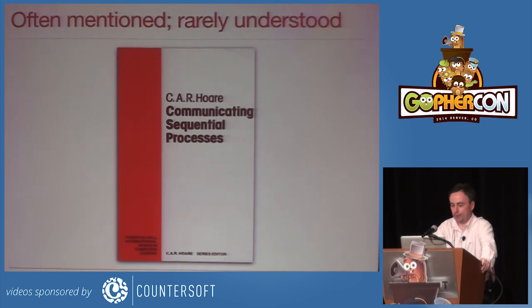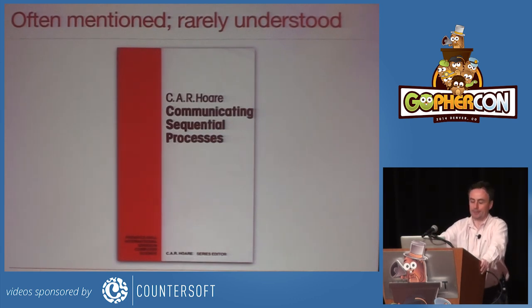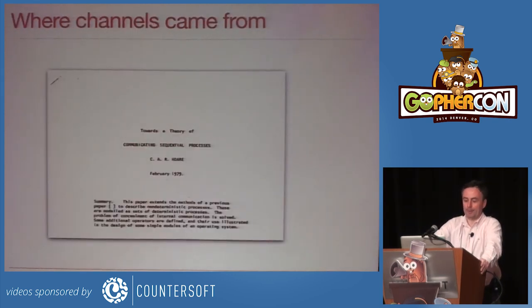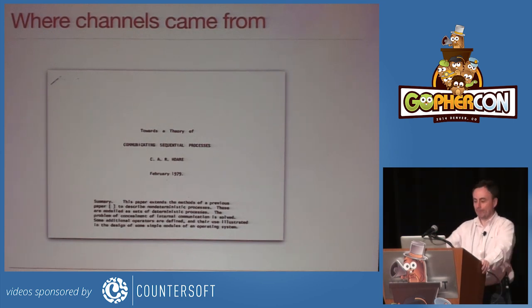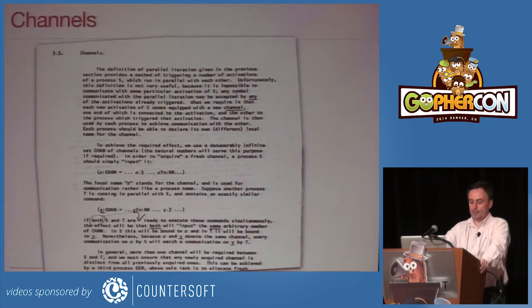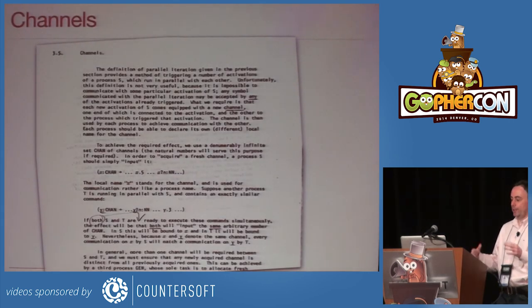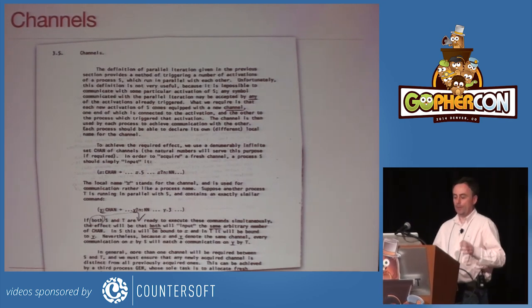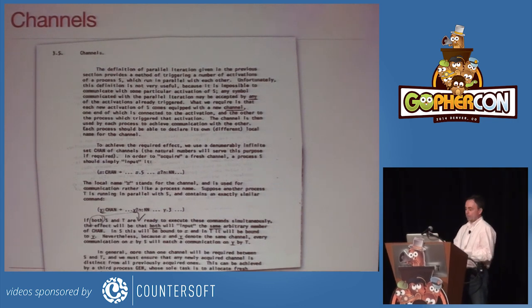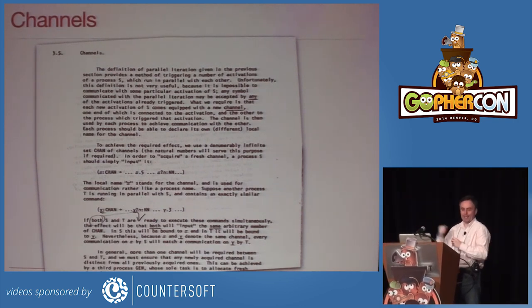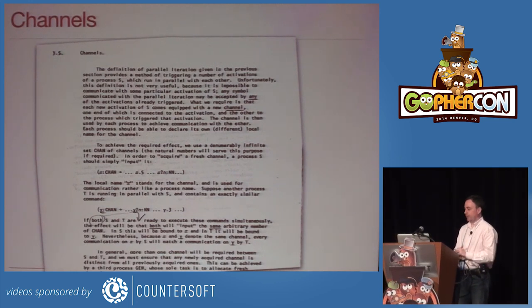I had the misfortune or fortune to go to Oxford and Tony Hall was the professor of computer science, so everything was either ML or CSP. I can answer Rob's question about where channels came from. They are actually in this paper — the 1979 paper 'Towards the Theory of Communicating Sequential Processes', which comes after the '78 paper. It actually says we're going to have this problem with these processes talking to each other, and the technique we'll have is a channel. The only real difference with what's in Go is there's a channel-generating process where you go get a channel if you need a new one. But that's where they come from.